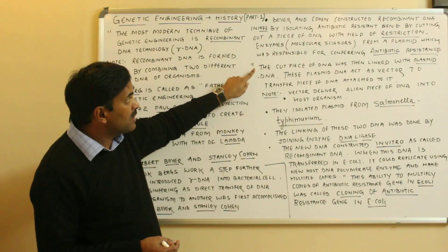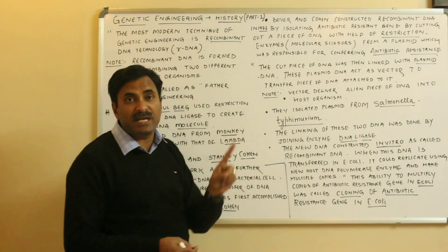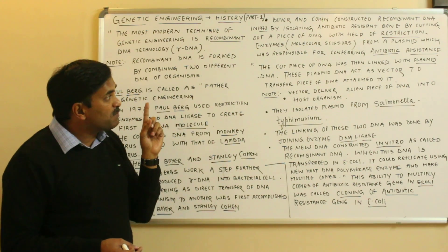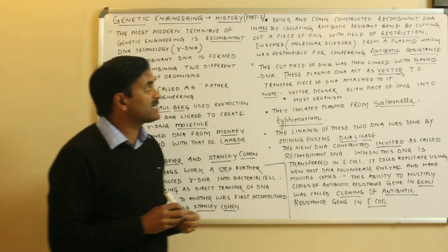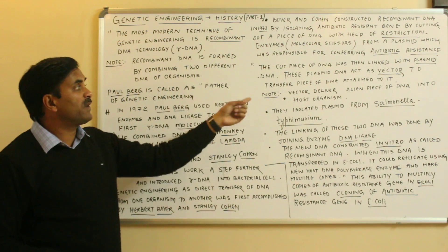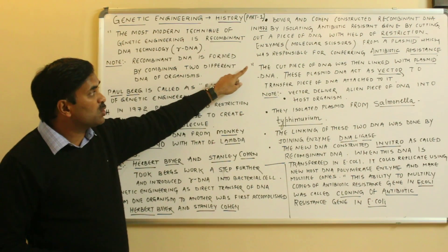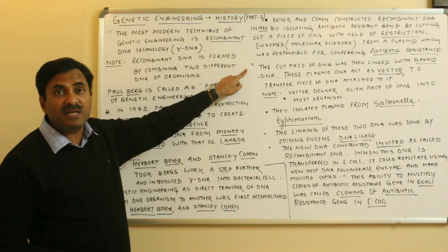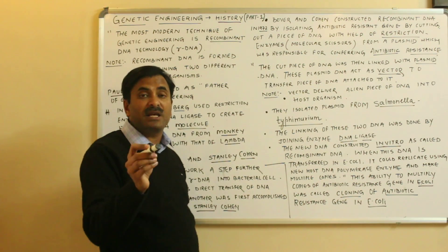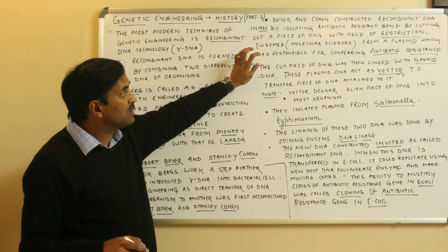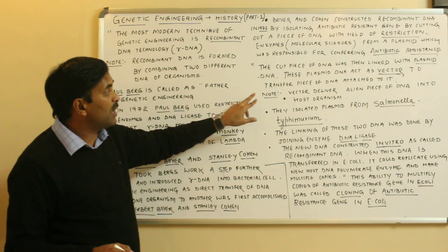The piece of DNA that was cut out with the restriction enzyme was then linked with the plasmid DNA. This plasmid DNA acts as a vector — it carries the piece of DNA attached to it into the host cell.